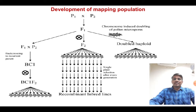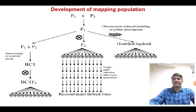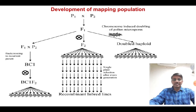Our major objective involves identification and utilization of genetic stocks for various agronomically important traits, development of functional markers for desired traits or phenotypes with high breeding value, and their deployment in the crop improvement program.